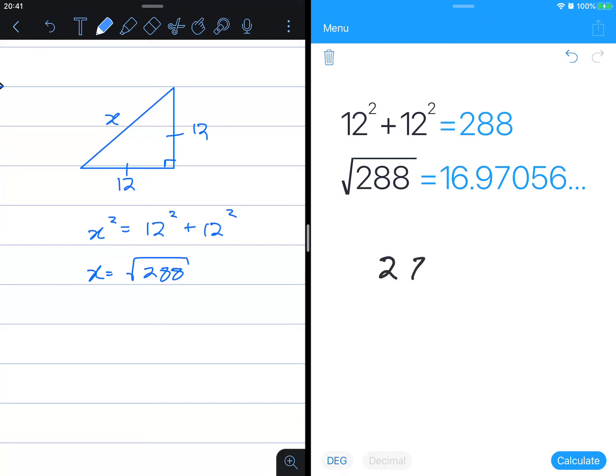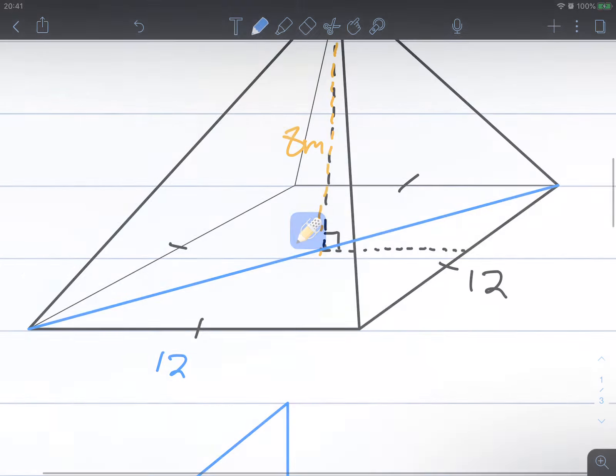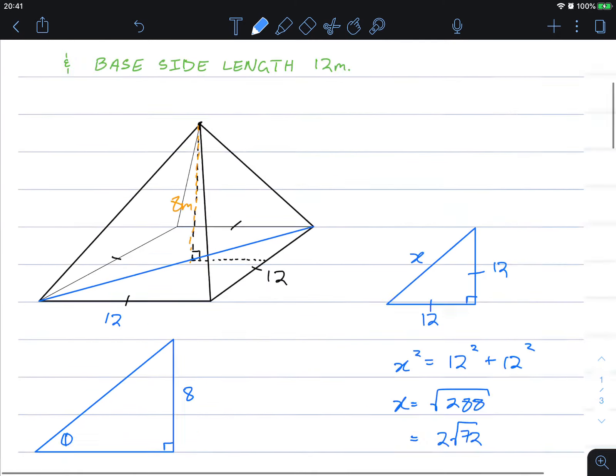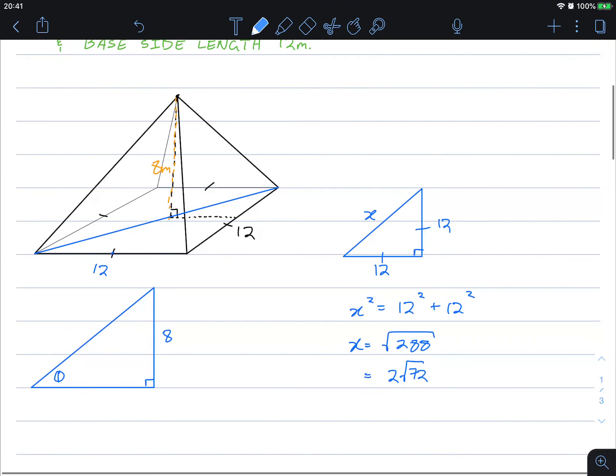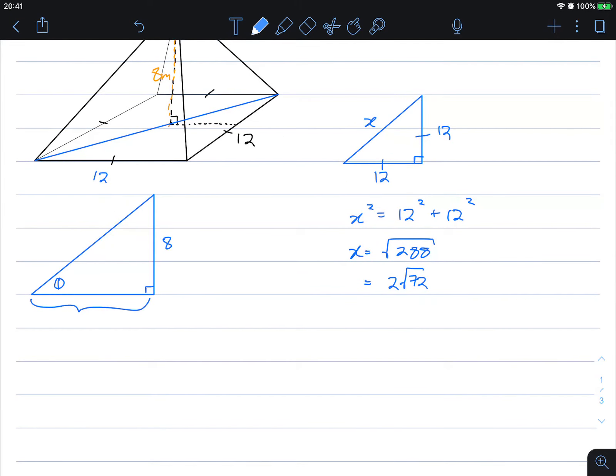And if we simplify this, let's see if I can halve this. Oh sorry, divide it by 4. Good. This will give me 2 root 72. Now, the reason why I did that, because now this entire diagonal is 2 root 72, but what we want only takes it halfway. It stops halfway here, which means this length here is root 72. It's halfway of the full diagonal of that length.